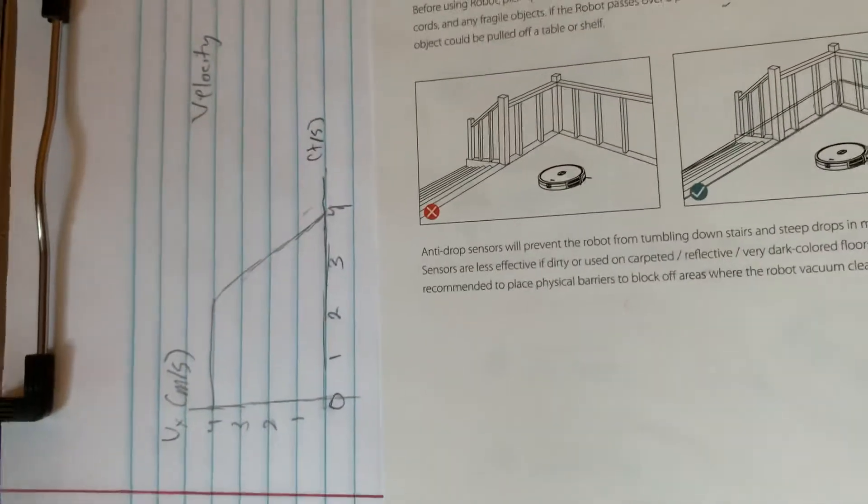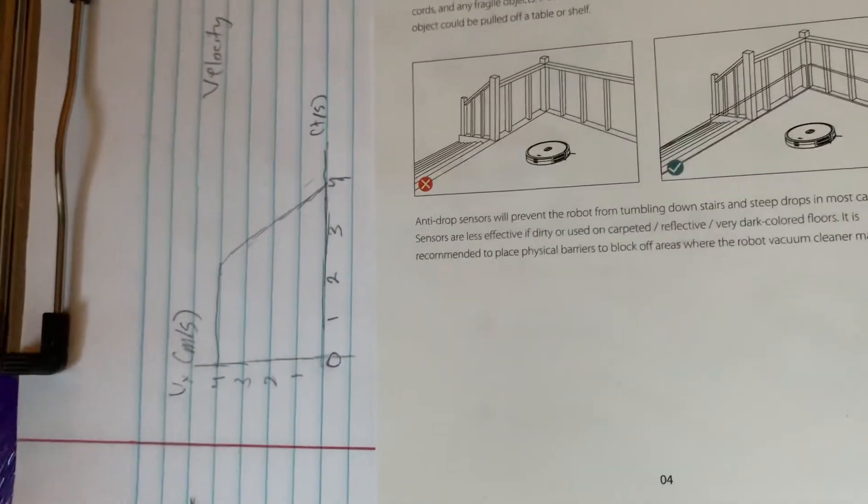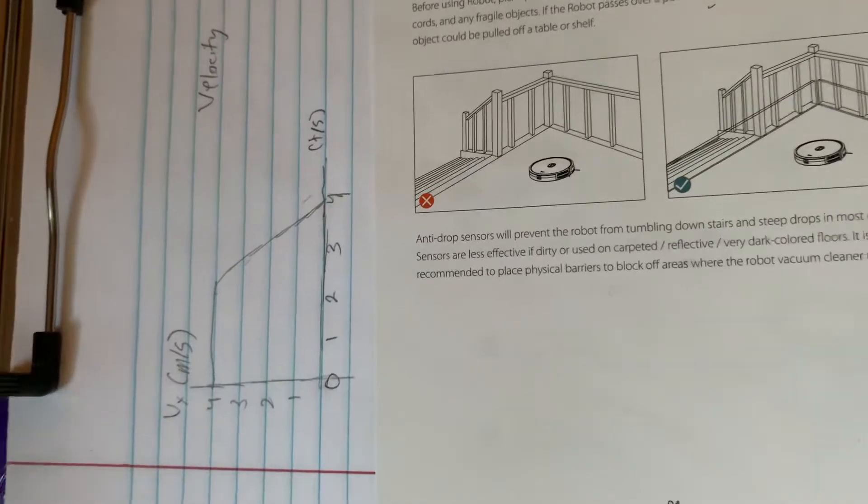So given this velocity versus time graph, let's write a position versus time graph and an acceleration versus time graph.